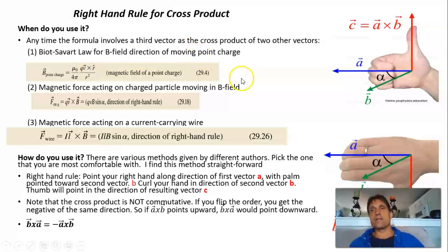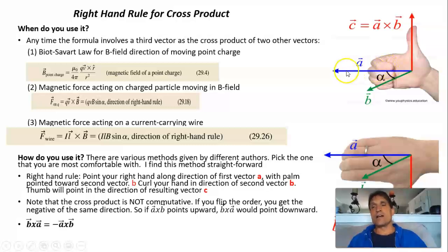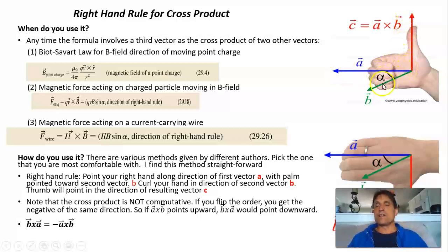The one that works best for me: point your fingers in the direction of the first vector A with your right hand, and have your palm pointing toward the second vector B. If you do that, your thumb will give the direction of the resulting vector C — it's in the plane perpendicular to A and B, and in this case it's pointing up. So again, point your fingers along the first vector with the palm pointing toward the second, and your thumb will point toward the result.